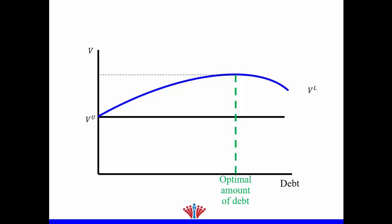In this video we would like to know what is the effect of using debt on firm value. Let's start with the first example: we have no debt, therefore we call it unlevered value. Unlevered means there is no debt, no leverage, no gearing. If the firm doesn't have debt, its value will be horizontal — this is the value of unlevered. Then what will happen if a firm starts to use debt?